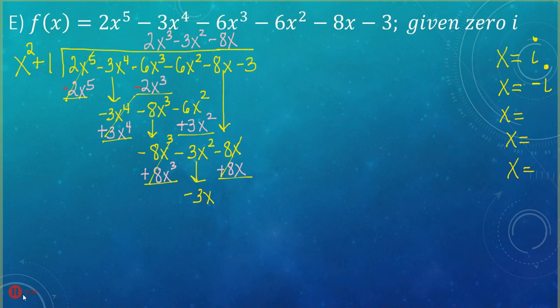We have two things canceling out and we're ending with negative 3x². Bring down the negative 3. Divide negative 3x² by x² — that gives us negative 3. Negative 3 times x² gives negative 3x², and we're ending with a remainder of zero, so I feel confident.